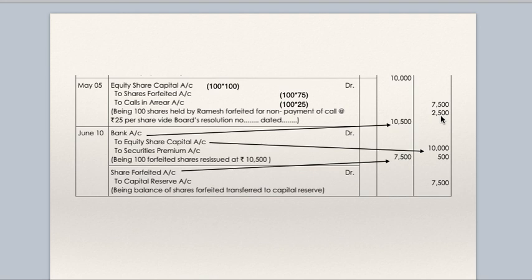The shares forfeited account receives whatever was paid on the forfeited shares. On application: Rs. 25 capital + Rs. 25 premium. On allotment: Rs. 50. So Rs. 75 was received and Rs. 25 first and final call was not received, which gets transferred to calls in arrears.